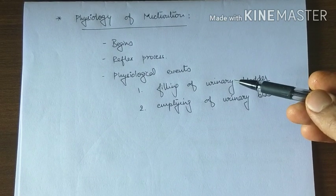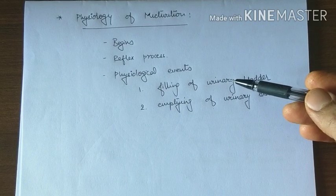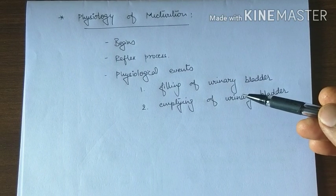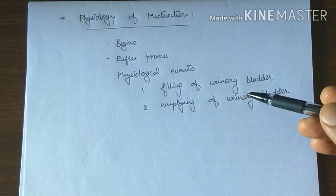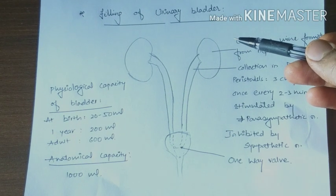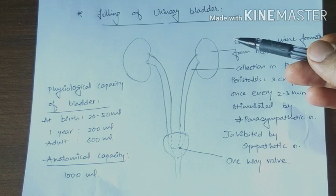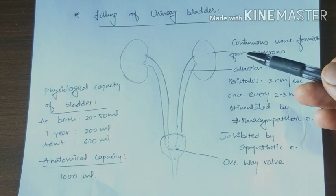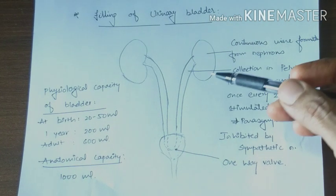Physiological events in micturition include filling of the urinary bladder and emptying of the urinary bladder. Starting with filling of the urinary bladder: Urine is continuously formed in the nephrons and transported through the ureter into the urinary bladder.